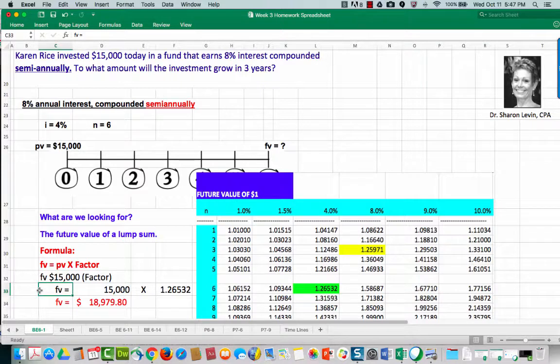We now have the future value is equal to $15,000 times the factor, 1.26532. When we do the computation, we see that the future value is equal to $18,979.80.